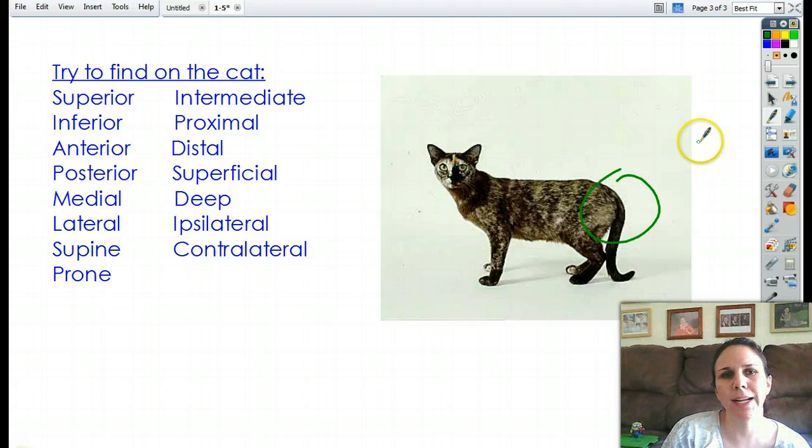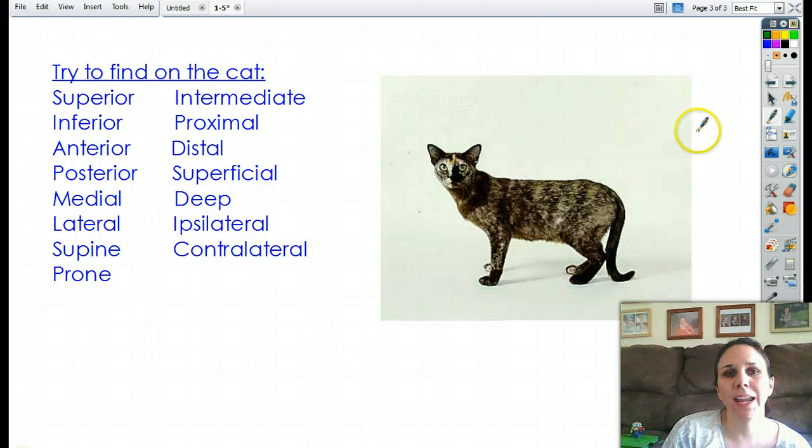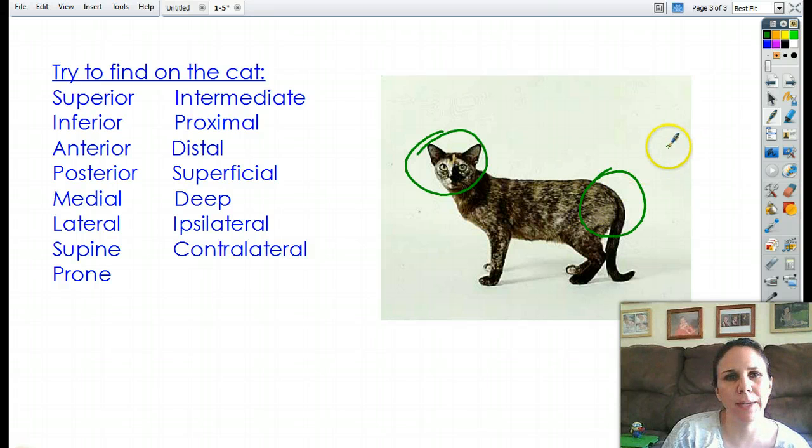Okay. Anterior would be towards a hiney. Post, whoop, I'm sorry, I got that backwards. Let me try it again. Anterior means towards the head. Posterior means towards the booty. Okay.